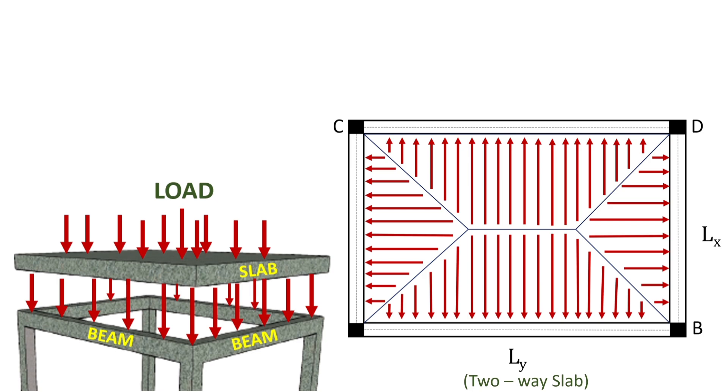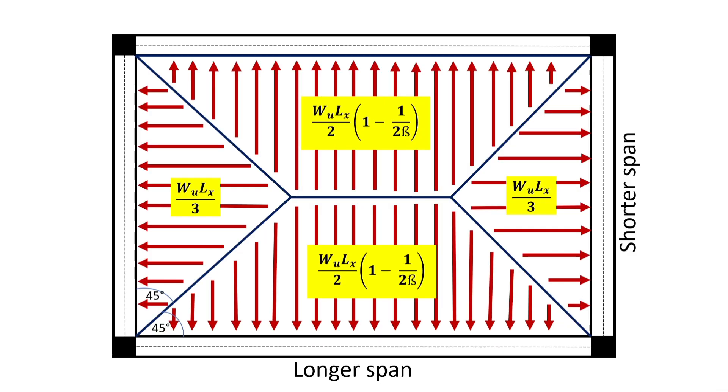In a two way slab, the load distribution takes place in both the directions and the load is carried by all the beams or walls along all four sides. To understand the load distribution in a two way slab, it is divided into 4 parts, 2 triangles and 2 trapezoids. The angles subtended by the congruent sides of the triangle to the adjacent spans are 45 degrees. The load of the triangular areas is carried by the beams along the shorter span of the slab, while the load of the trapezoidal areas is carried by the beams along the longer span.